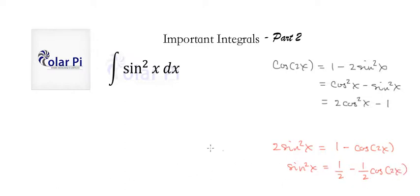So what we're going to do is replace sine squared here with this right-hand side. And doing so, we can rewrite our integral as follows, which is 1 half minus 1 half cosine 2x dx.